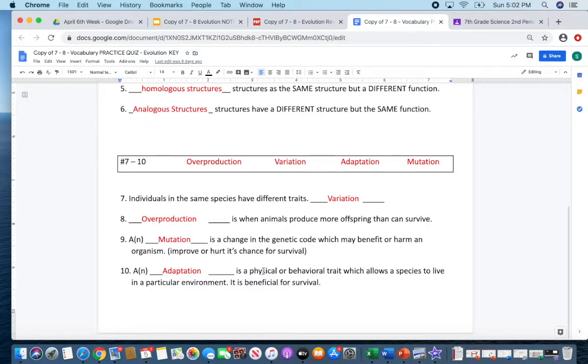And then I would definitely know these last four here. Overproduction, variation, adaptation, and mutation. Individuals in the same species that have different traits, it's called variation. Remember, all humans are the same species. We are all humans.